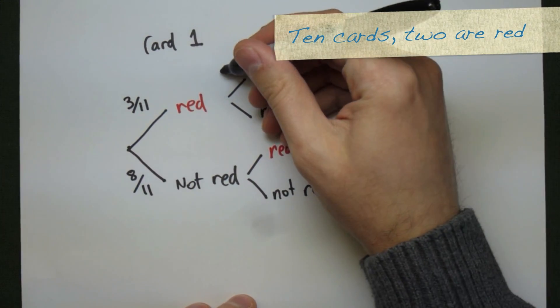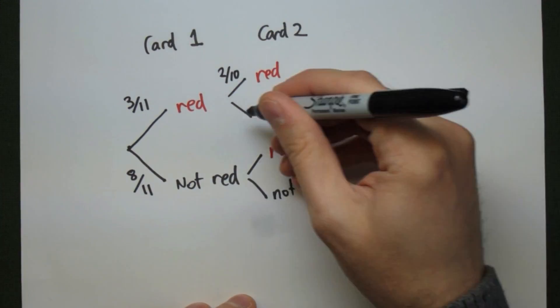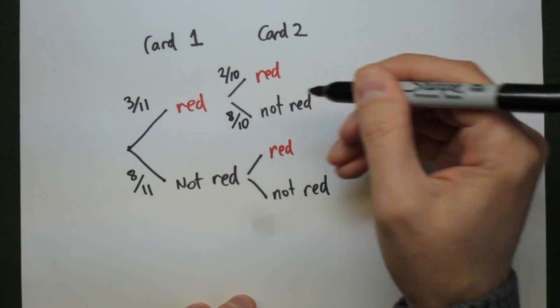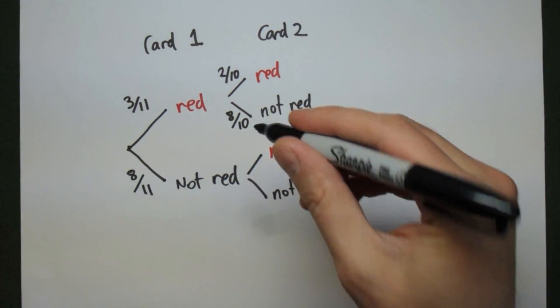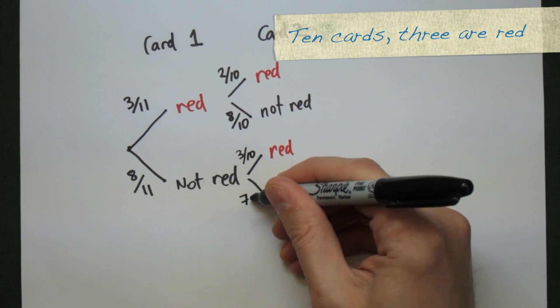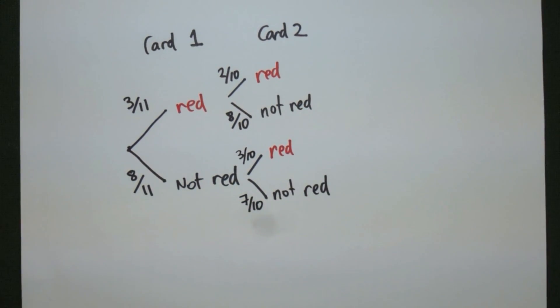So we've pulled a card already. Out of the ten cards left, two of them are red for this upper branch here, which means my probability is two out of ten, and then eight out of ten for the other. For the second branch, if the first card wasn't red, three of the remaining cards are red. So three out of ten, and seven out of ten.